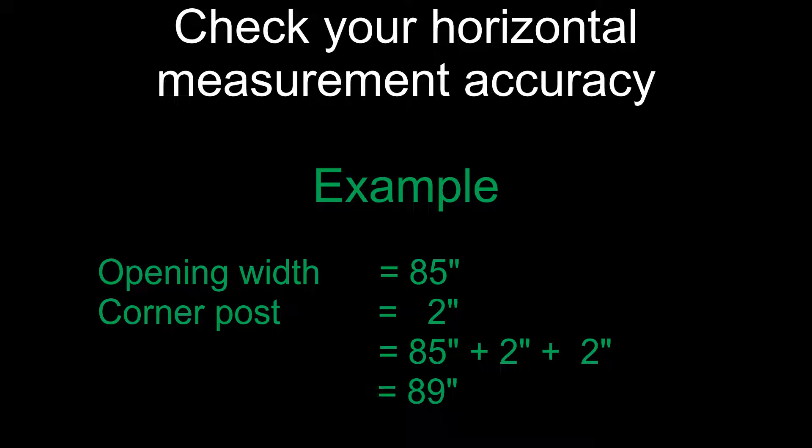Check your horizontal measurement accuracy. Example: the opening width is 85 inches and your corner posts are 2 inches. As there are two corner posts, you must add 85 plus 2 plus 2. This gives you a total of 89 inches.